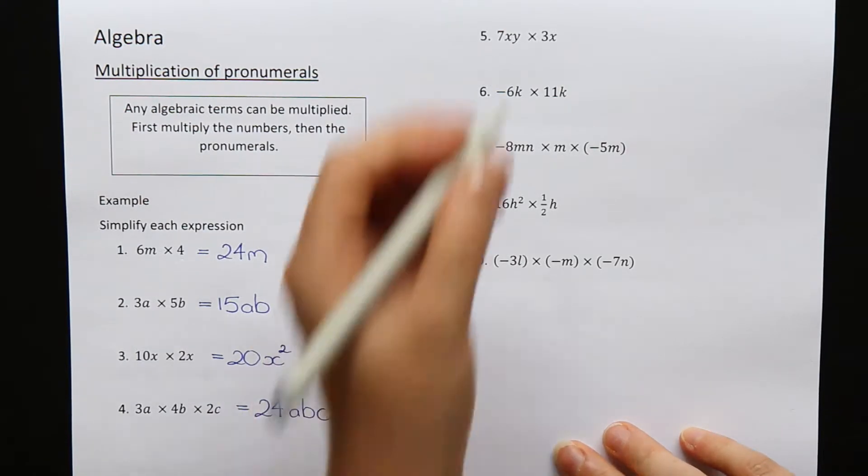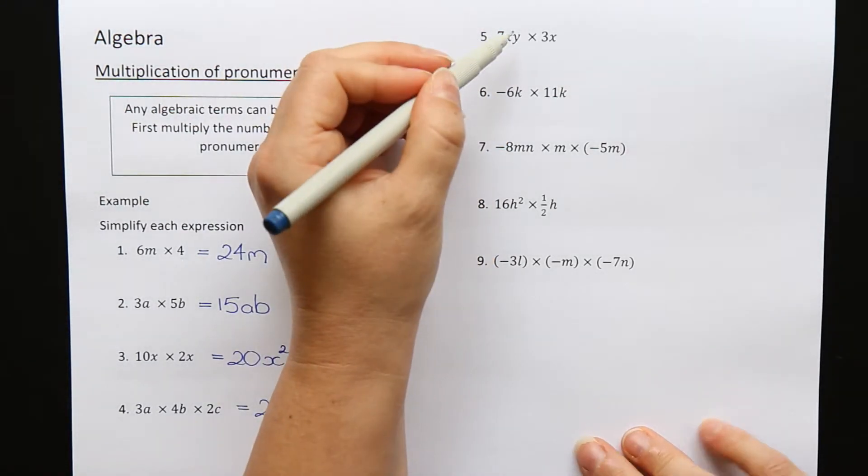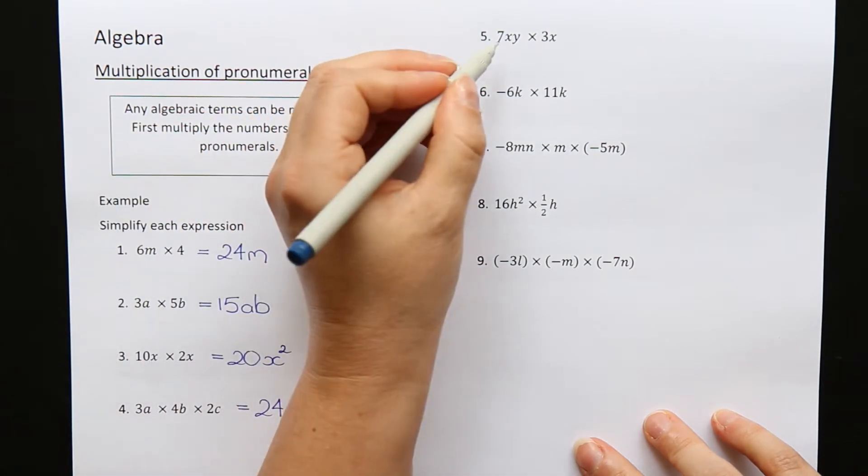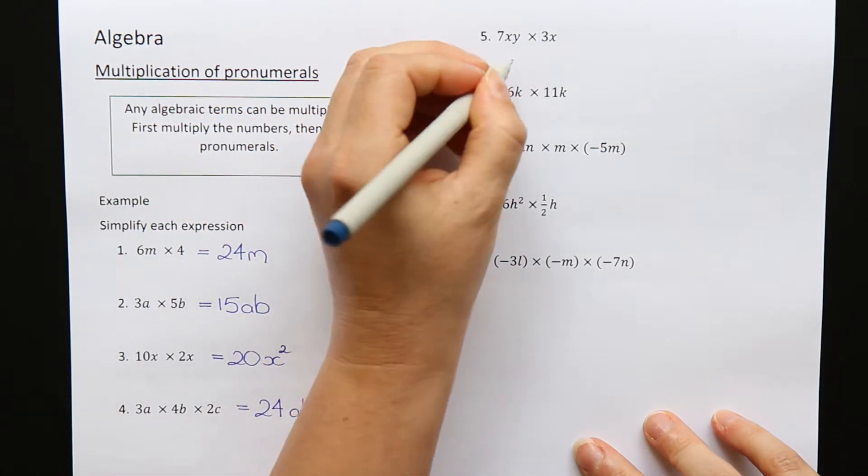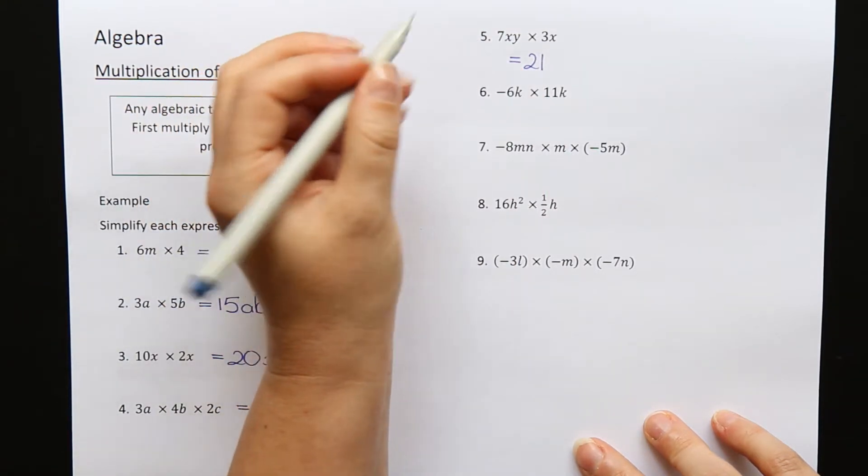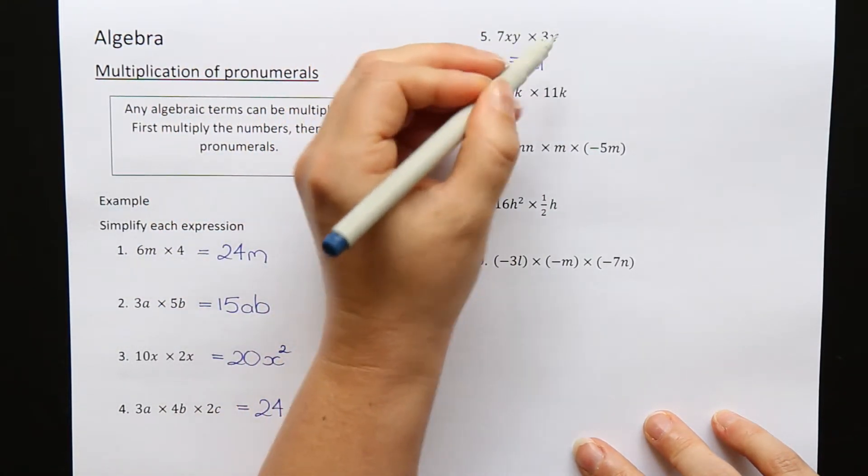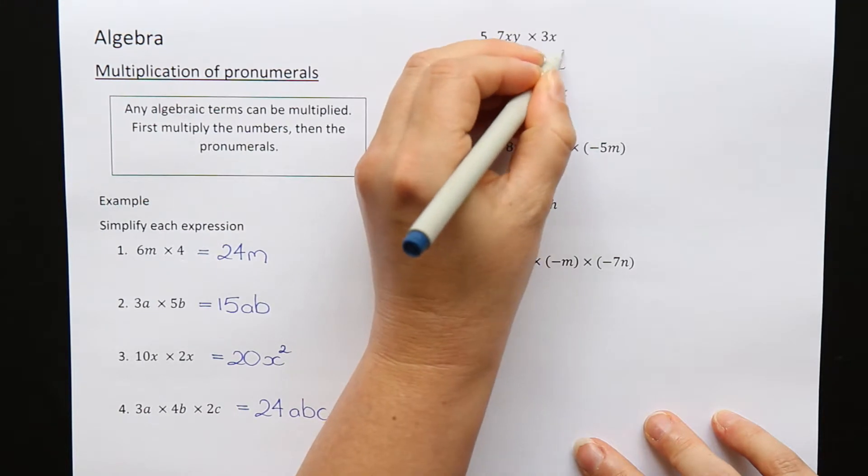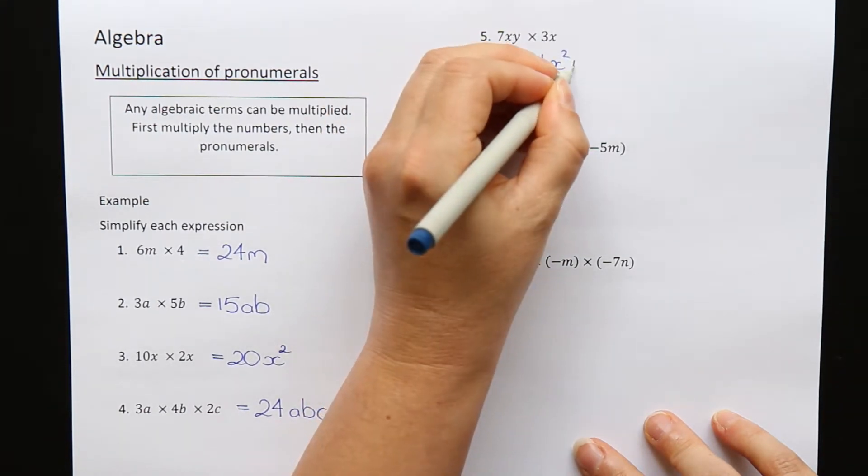Question 5: 7xy times 3x. Multiply the numbers—7 times 3 is 21. The letters: I have x and x, so x times x is x squared, and I also have a y.